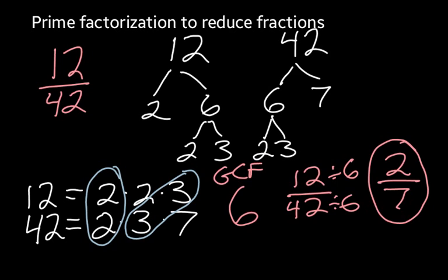Another thing to notice is, notice which prime factors are left over. We have a 2, and we have a 7. That's not a coincidence that over here we have 2 7ths. It's the leftovers after we take out the greatest common factor.